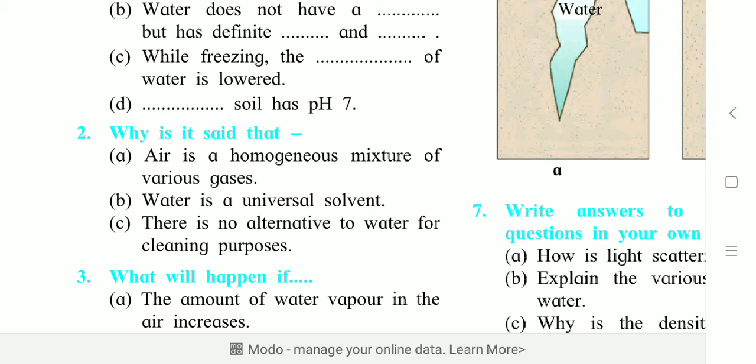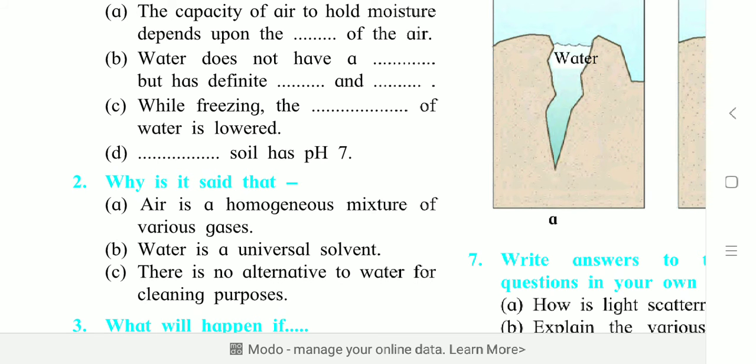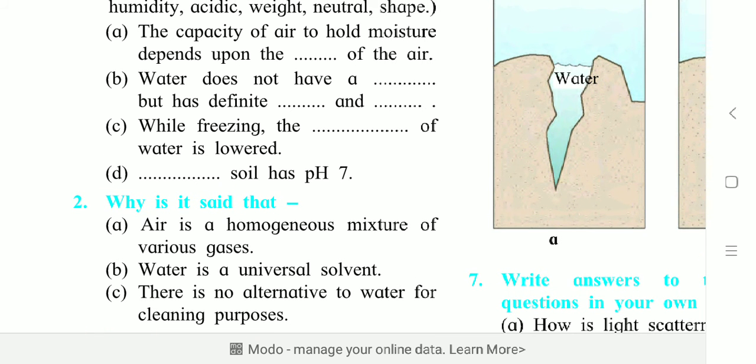Question number two: why is it said that... In short, students, answers of these questions should be in point-wise manner. I will try to give the answers in writing form in notes for your understanding. First question is: air is a homogeneous mixture of various gases. Why is it said that?